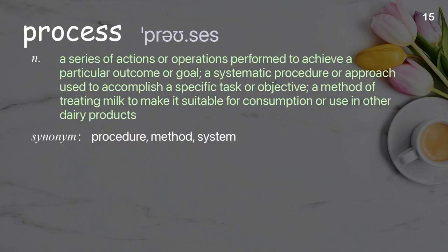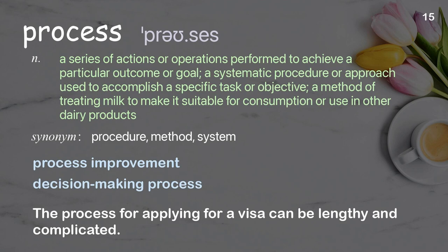Process. A series of actions or operations performed to achieve a particular outcome or goal; a systematic procedure or approach used to accomplish a specific task or objective; also a method of treating milk to make it suitable for consumption. Examples: process improvement, decision-making process. The process for applying for a visa can be lengthy and complicated.